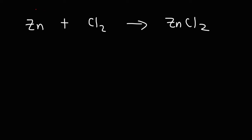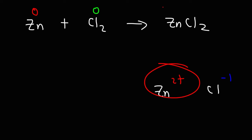The oxidation state of a pure element is always zero. In a compound it can change. In zinc chloride, zinc has a two plus charge and chlorine has a minus one charge. It's good to know your common ions — I recommend printing out the polyatomic ion sheet from Google Images. So the oxidation state of zinc is plus two, and for chlorine the oxidation state is minus one.